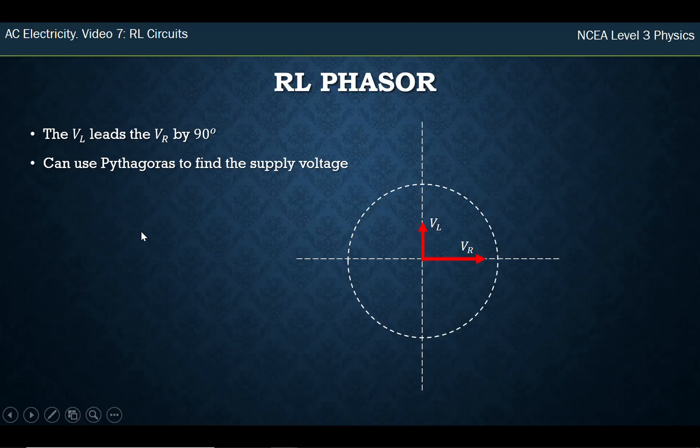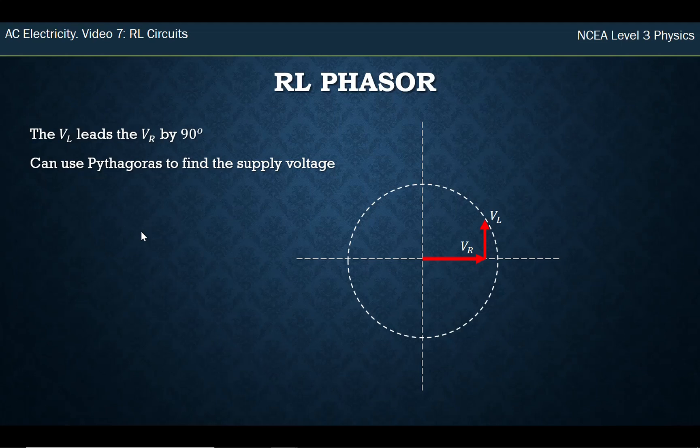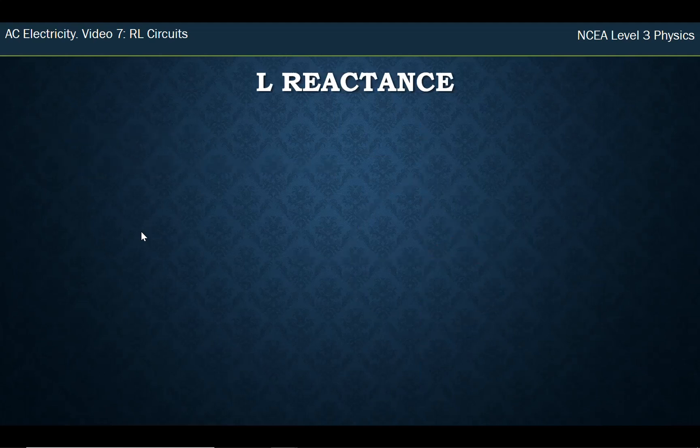If we wanted to, using these two we could find the supply voltage, the same thing using Pythagoras. We can move the inductor voltage over there so the vectors are being added tail to tail and then work out the supply voltage.